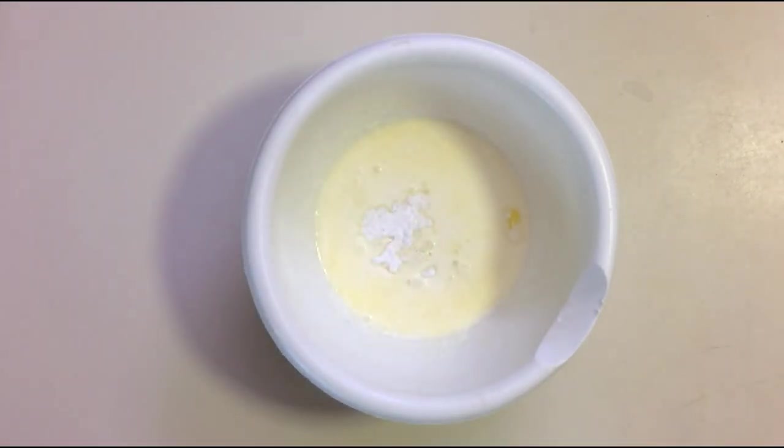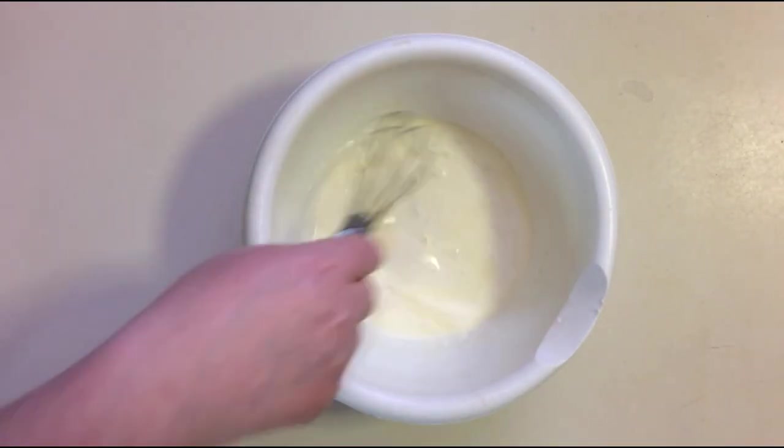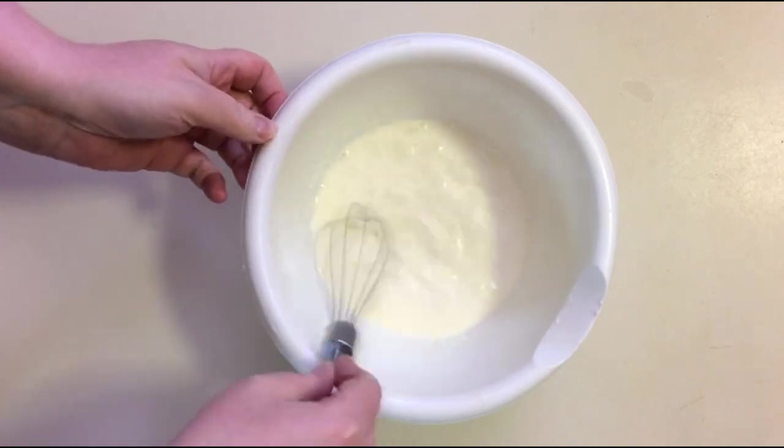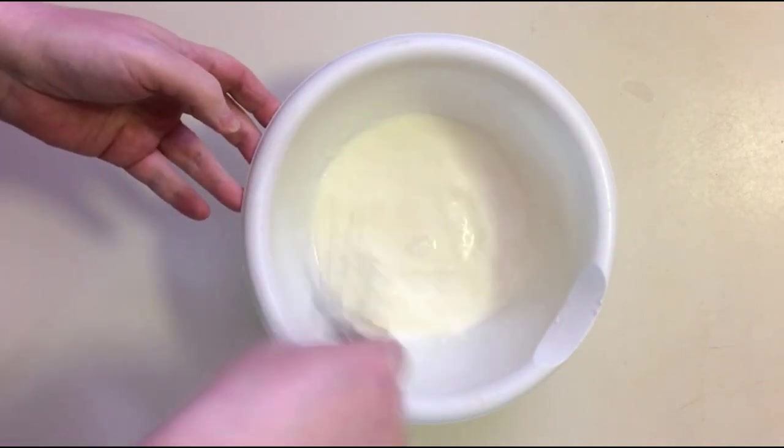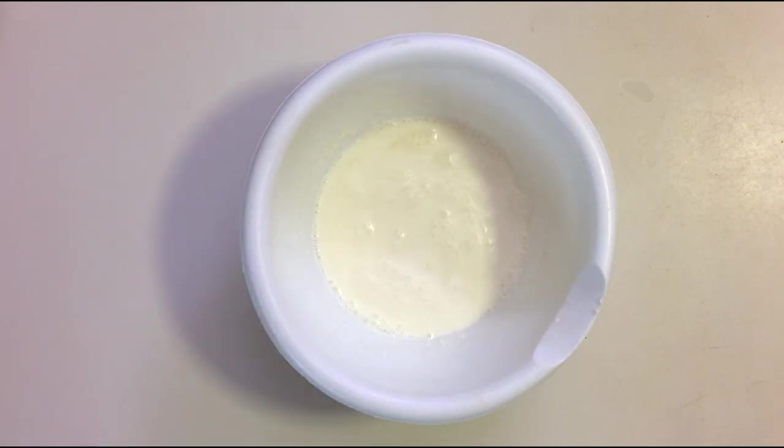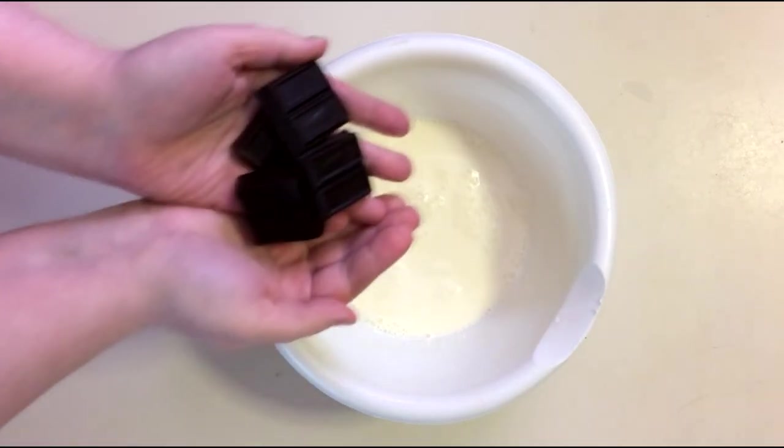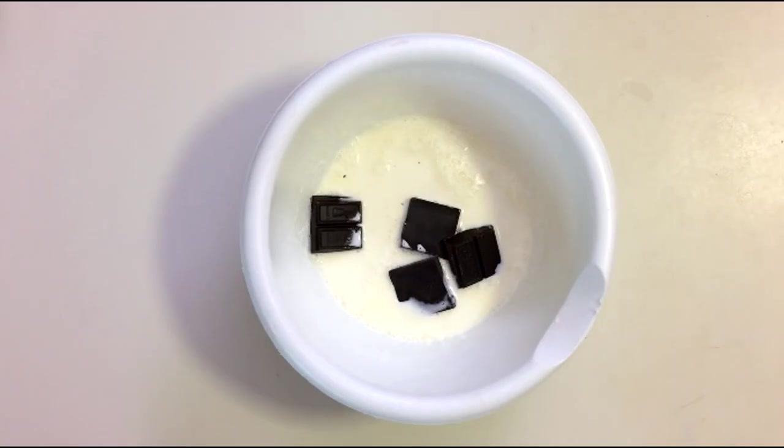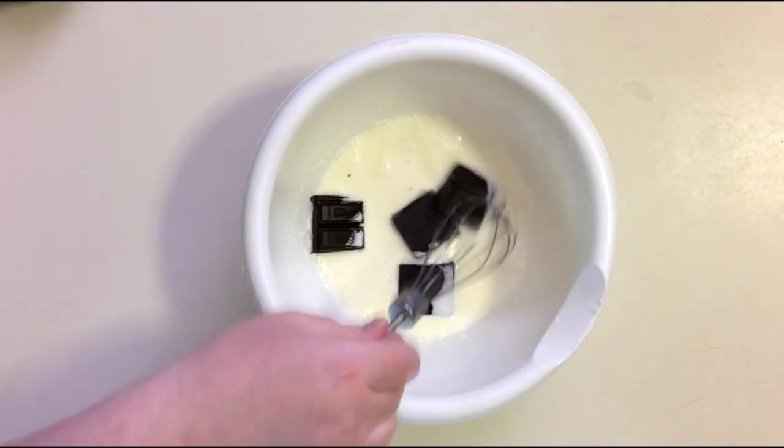And then add your erythritol and whisk that in. Then you're going to add your unsweetened baker's chocolate and press that down into the heavy cream.